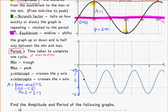And to find the midline, one way to do that is to do the max minus the amplitude. So, here my max is negative 0.5, my amplitude is 1, so I'll subtract that away. And I get my midline is at negative 1.5.